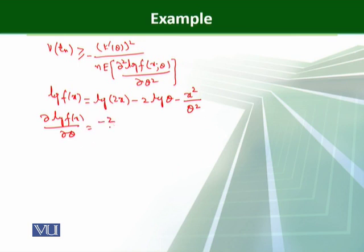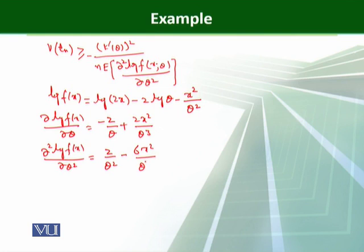The derivative is negative, so that is positive, which is 2x squared over theta cubed. Now we need the second derivative because we use it in the result. So the second derivative log f of x over theta squared will be - that is 2 over theta squared - that is simple and straightforward differentiation - that is 6 x squared over theta raised to power 4.